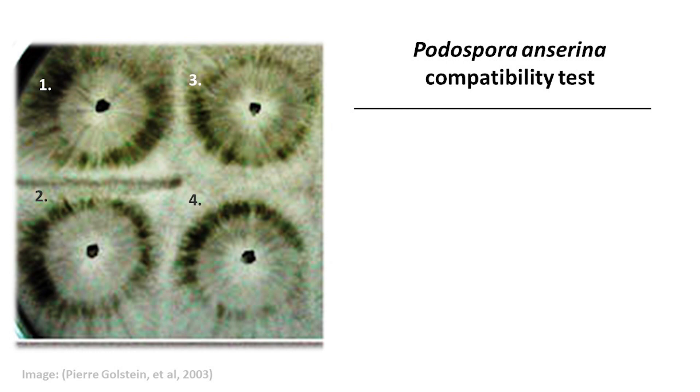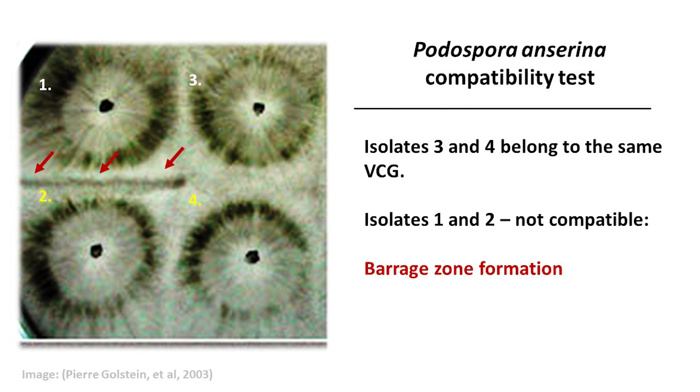Here you see four colonies of Podospora anserina. Isolates 3 and 4 are compatible. They belong to the same vegetative compatibility group. You can see that area of contact is smooth, while isolates 1 and 2 are vegetative incompatible. We observe the result of programmed cell death, darkly pigmented lytic area or barrage zone, where mycelium from two incompatible isolates meet.